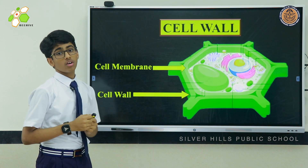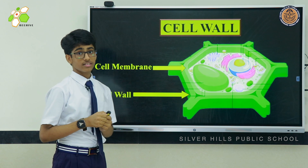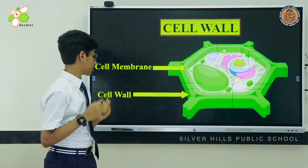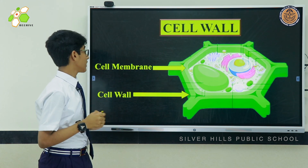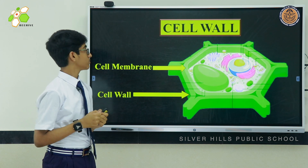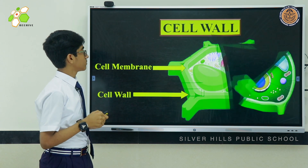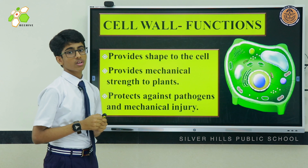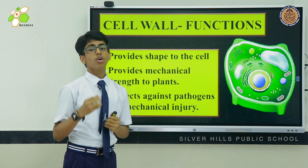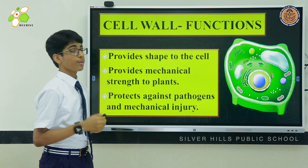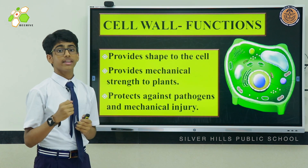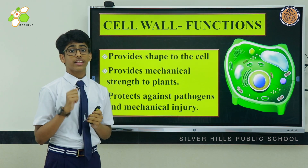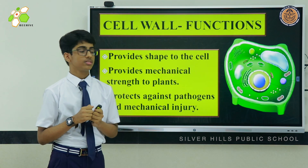Here we can see the picture of a plant cell. The outermost covering is the cell wall and the inner covering is the cell membrane. Functions of cell wall: it provides shape and mechanical strength to the cell, and it protects against pathogens and mechanical injuries.